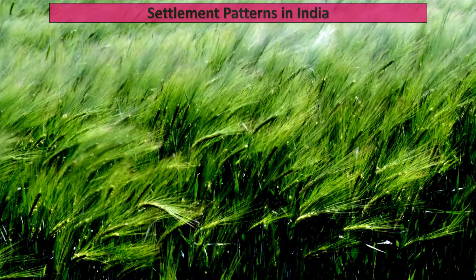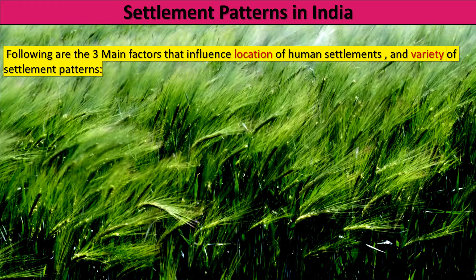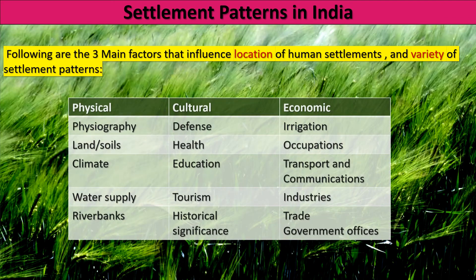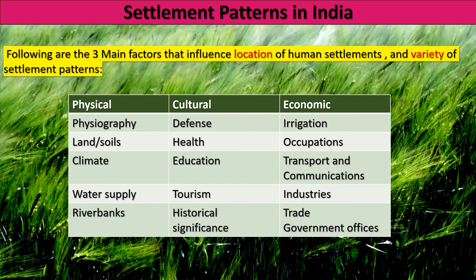There are three factors which influence the location and variety of settlement patterns: physical, cultural, and economic factors. Under physical factors: physiography, type of land and soil, climate, water supply, and river banks. Under cultural factors: defense, health, education, tourism, and historical significance. Under economic factors: irrigation, occupations, transport and communications, industries, trade, and government offices.